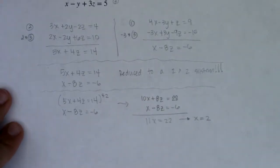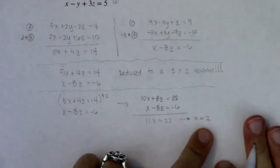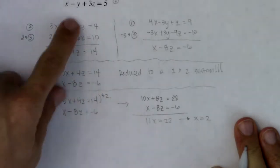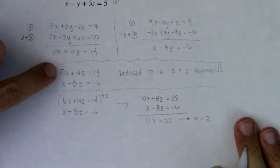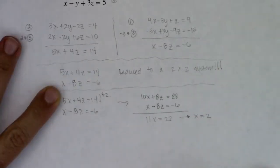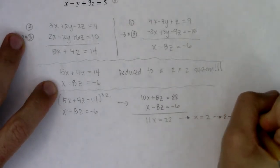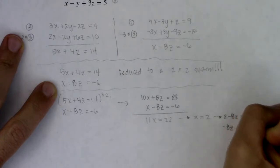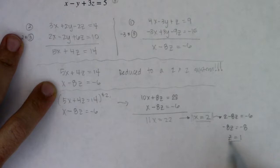Now I need an ordered triple to solve this — this is not an ordered triple, I only have one of my variables solved for. Once you get one variable solved for, you back-substitute. Take x equaling two and plug it into one of the two by two equations — you can't go all the way back to the three by threes yet; we don't have enough information. So I'll pick the bottom equation: two minus eight z is equal to negative six. Moving the two over: negative eight z is equal to negative eight, so z is equal to one.